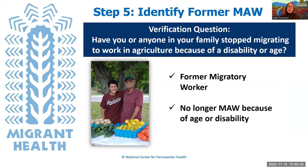Step five identifies former migratory agricultural workers. Under the Consolidation Act of 1996, the definition was expanded to include aged and disabled — these are former migratory agricultural workers who stopped migrating due to age or disability. Patients may have been both migratory and seasonal at some point in their careers, so it's important to ask all patients this question. This classification only applies to former migratory workers, and they are reported the same as current migratory agricultural workers — there is no special separate designation for them.